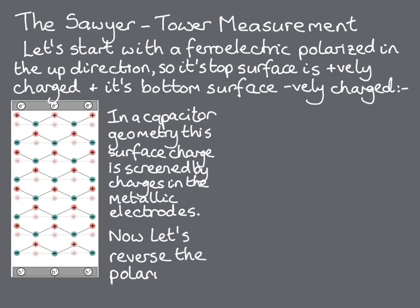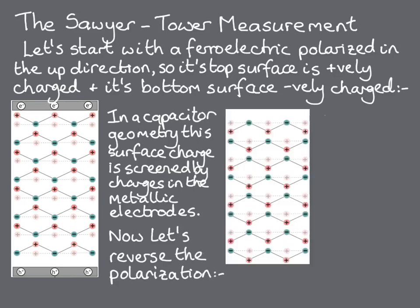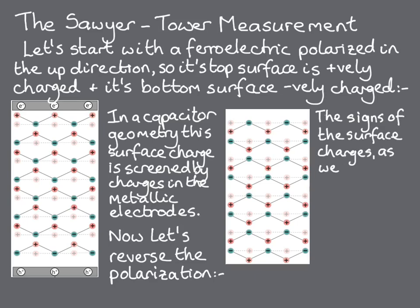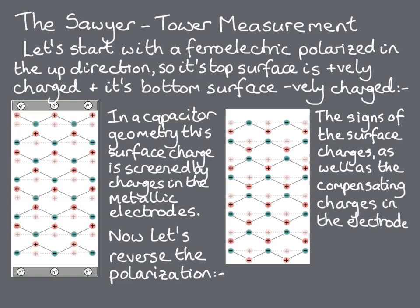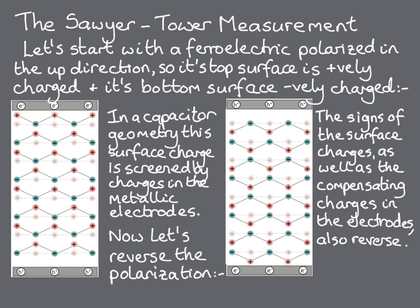The orientation of the ferroelectric is then reversed by applying an electric field. The cations shift down relative to the anions in our cartoon. The bottom surface becomes positively charged, and the top surface negatively charged. And the charges needed for compensation in the electrodes are opposite. The new compensation is achieved by electrons flowing through an external circuit from the top electrode to the bottom electrode, so that holes are left behind at the top surface, and at the bottom surface the holes are filled, and the same number of extra electrons is added.